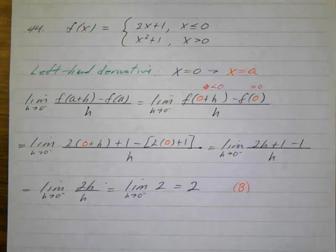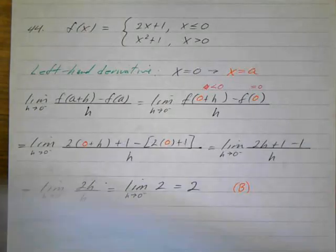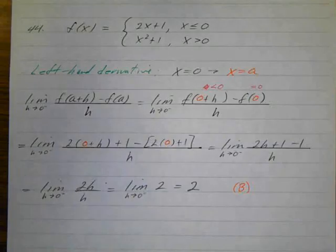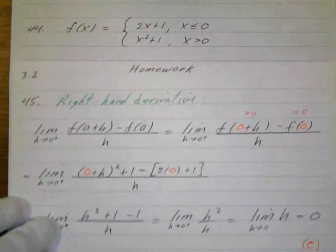And they also wanted to find the right-hand derivative. Number 45 was to find the right-hand derivative, so it was just basically one problem in two parts. And again, we're using this function. So if we look at the right-hand derivative.